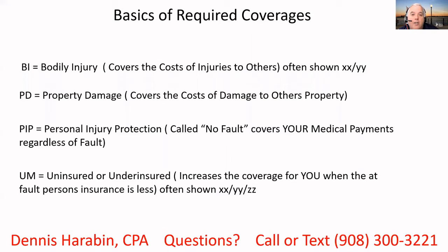The UM is for underinsured and uninsured motorists. That increases the coverage of an underinsured or uninsured person to the amount that you opt for in this coverage. This coverage is maxed out by the amount of coverage that you provide to others, so you can only cover yourself to the extent you cover the liability to others. And that's your UM insurance.